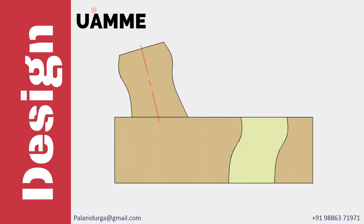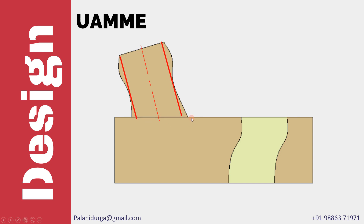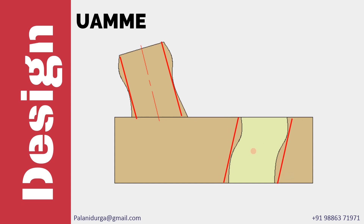In this particular drawing, we have both an external feature and an internal feature. For the external feature, there is an imaginary envelope which expands and touches the low point of the external feature. This envelope is not taking the reference of the datum, hence this is called the unrelated actual minimum material envelope. For the internal feature, the envelope contracts and touches the low point of the internal feature, and is also not taking the datum reference.